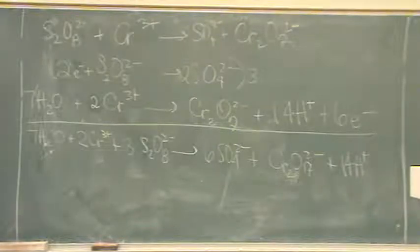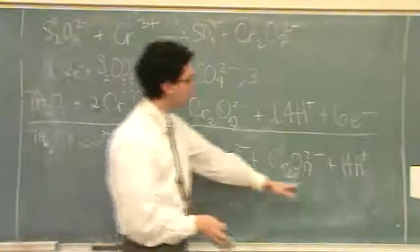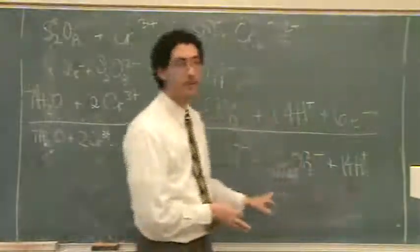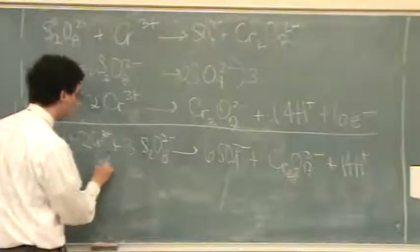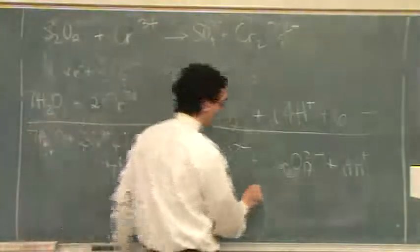We can change this to a basic answer if you want to do that sort of stuff. You have to locate the H plus. It's right here. It's 14 H pluses. So you have to add an equal amount of OH minuses. So 14 OH minus both sides.